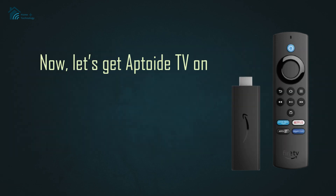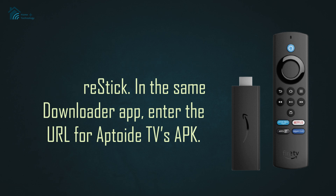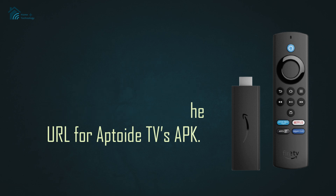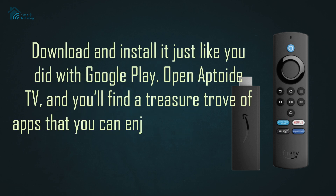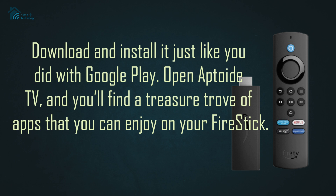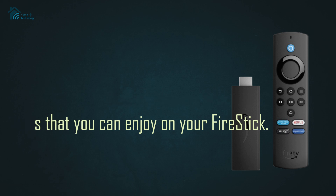Now, let's get Aptoide TV on your Fire Stick. In the same downloader app, enter the URL for Aptoide TV's APK. Download and install it just like you did with Google Play. Open Aptoide TV, and you'll find a treasure trove of apps that you can enjoy on your Fire Stick.